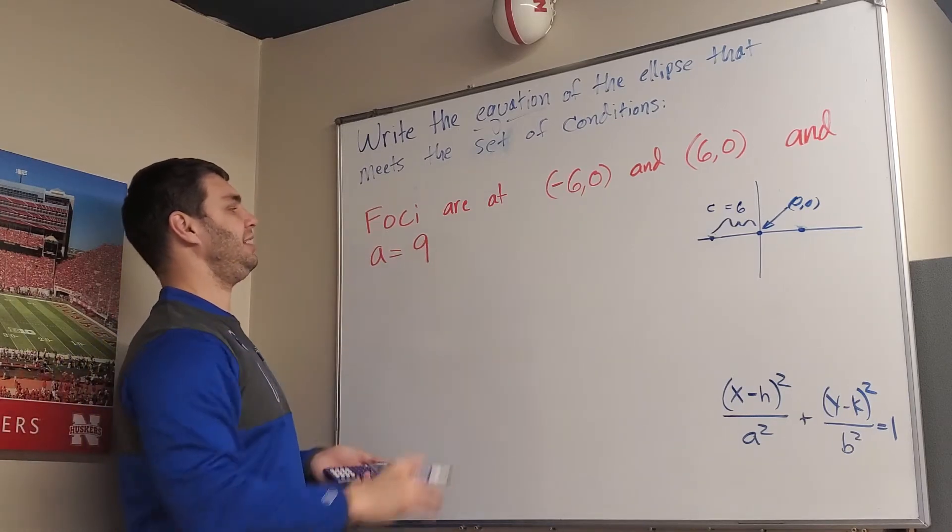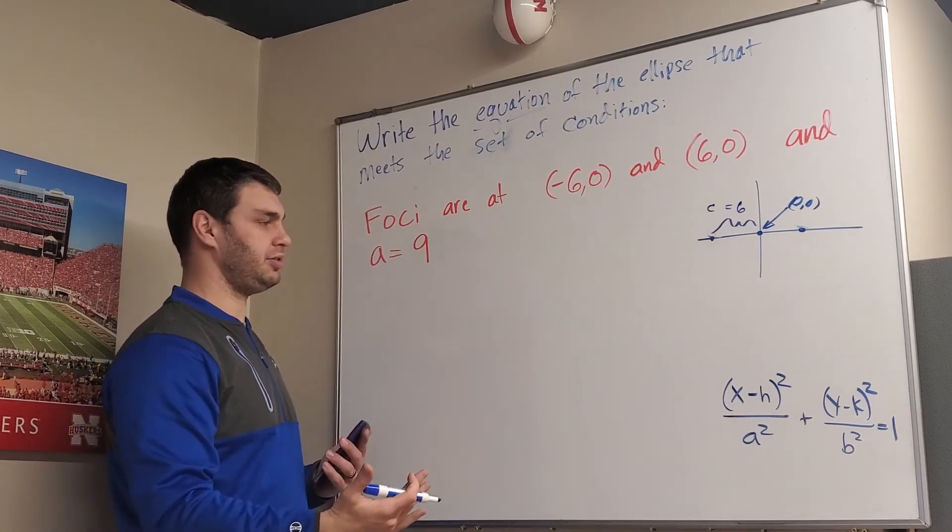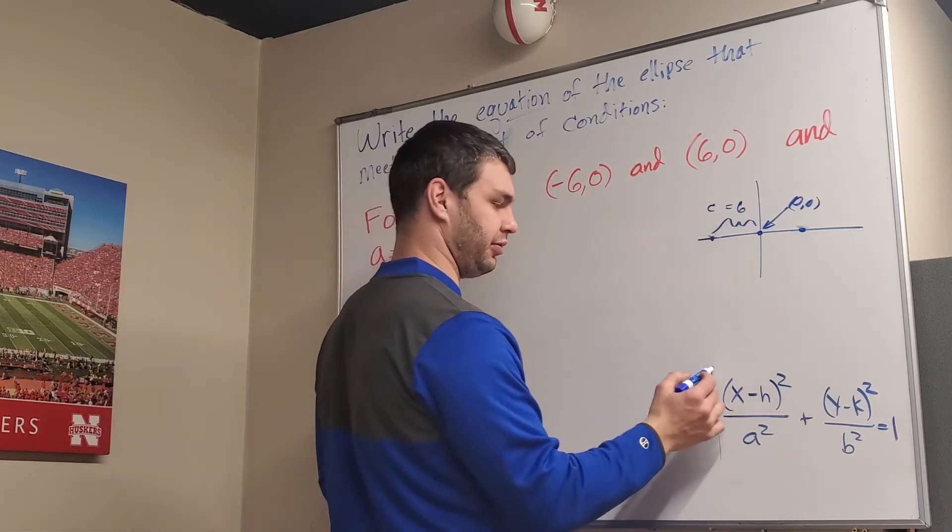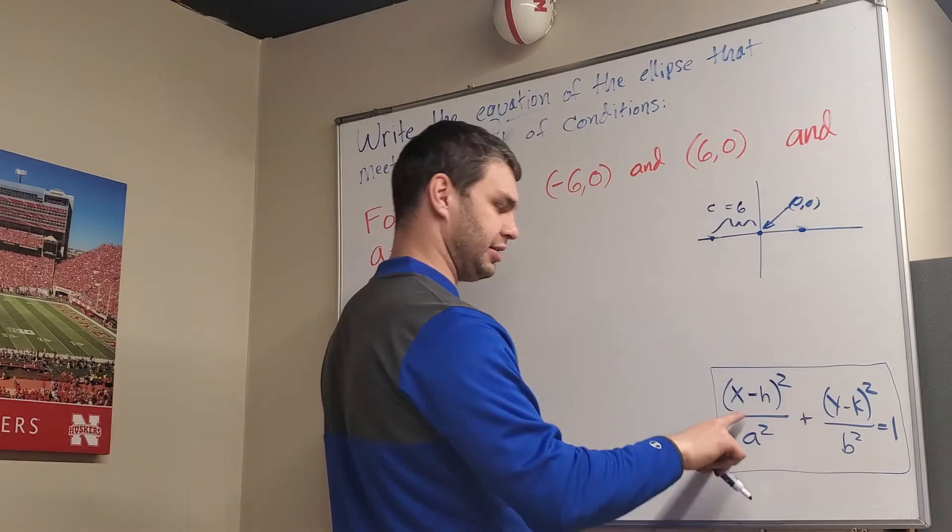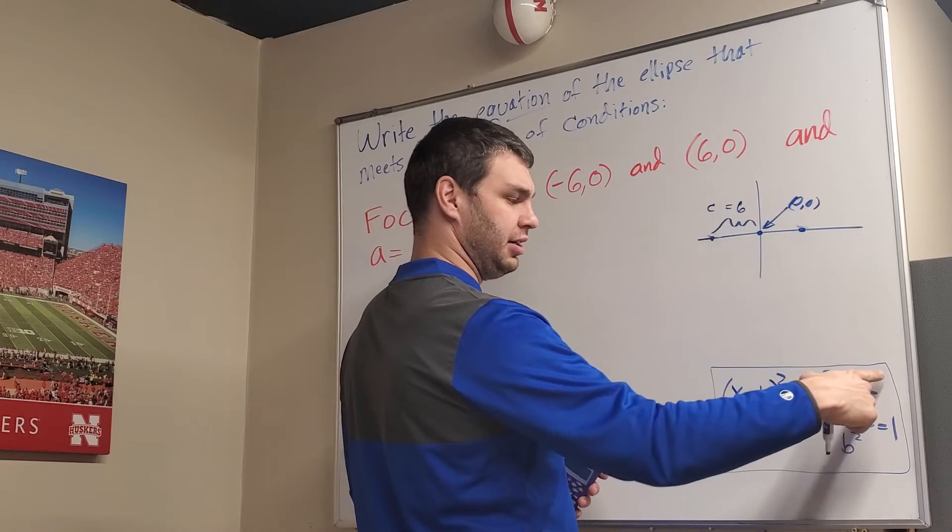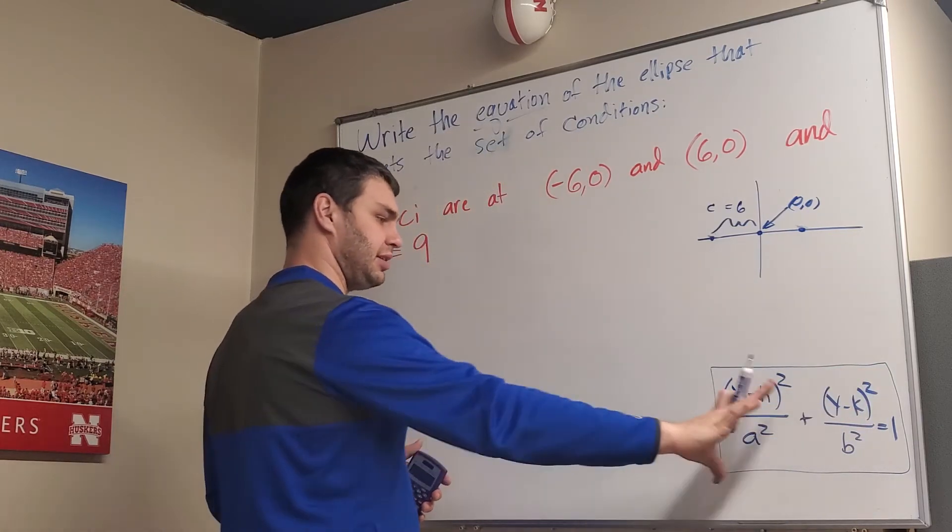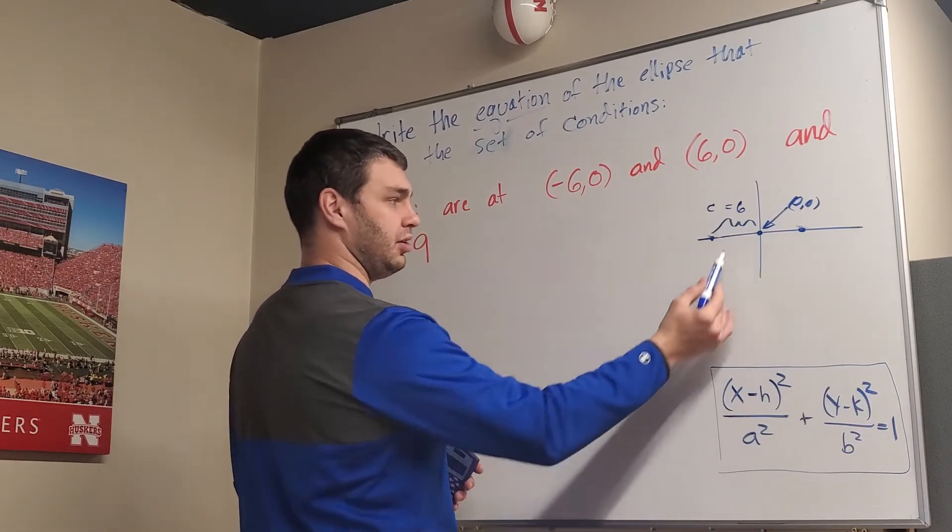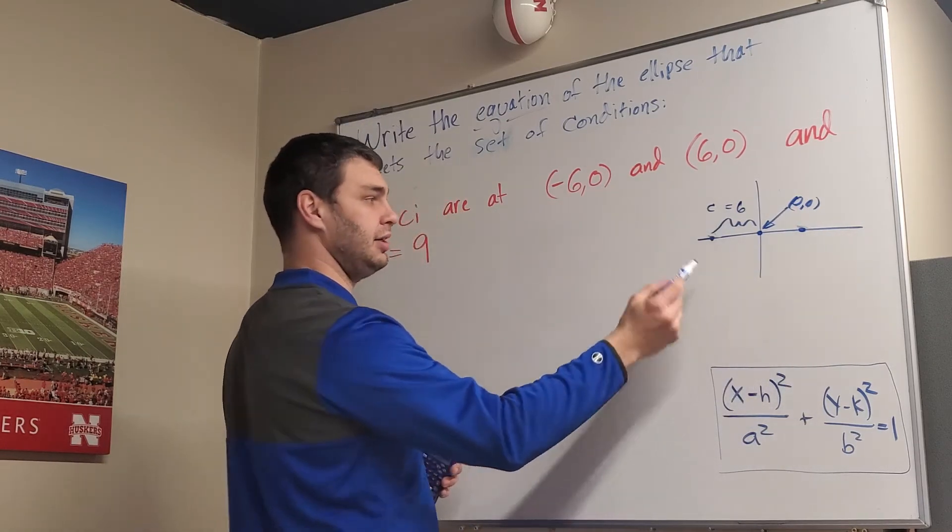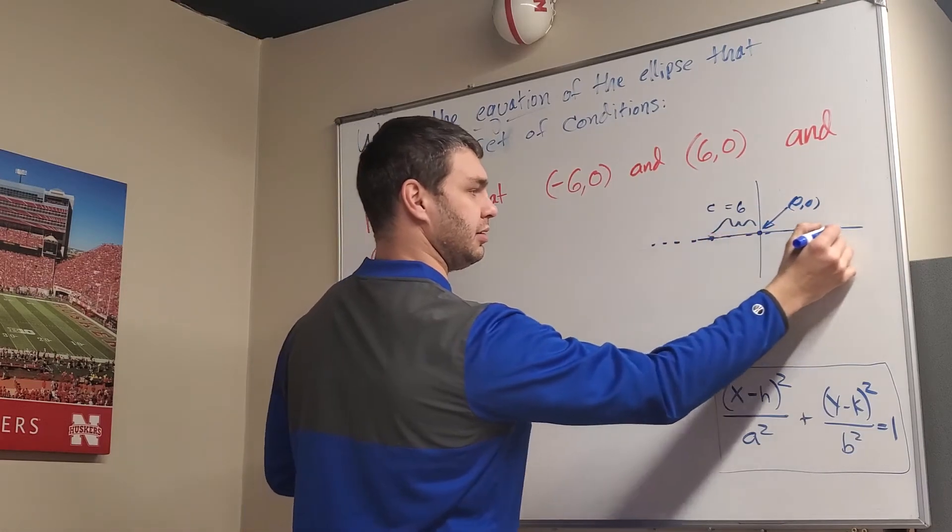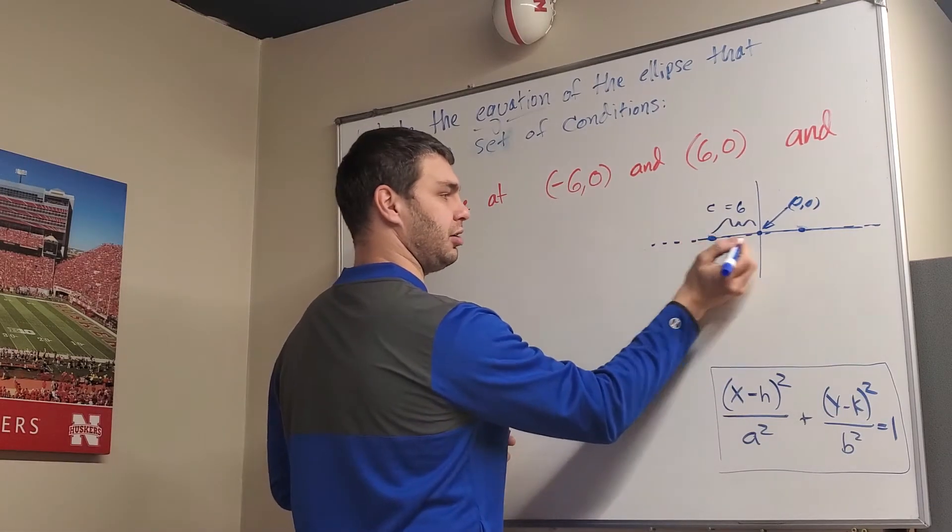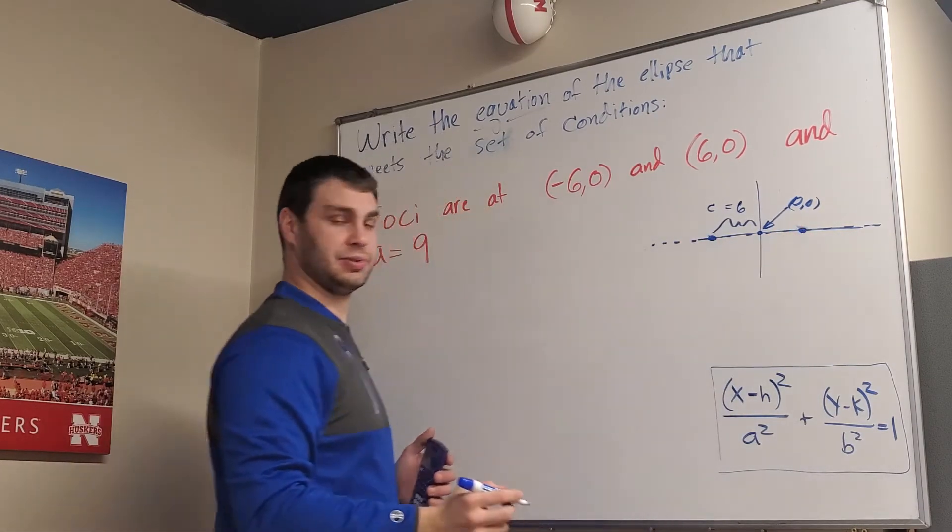So it wants us to write the equation of this ellipse, and we know a few of these values already, but we need to figure out a few others. First off, we think back through my general form where it's (x-h)²/a² + (y-k)²/b² = 1. I know it's going to be in this form because along my x-axis here is the major axis of my ellipse.